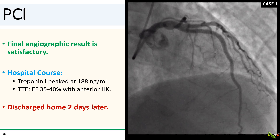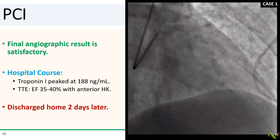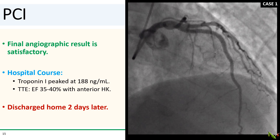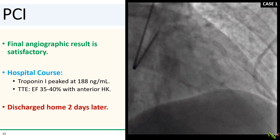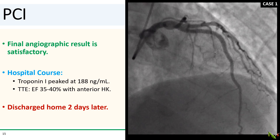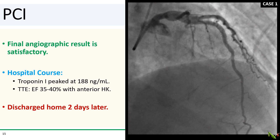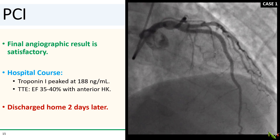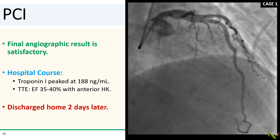She had a real MI. Her troponin peaked at 188 nanograms per ml, and the echo showed an EF of 35 to 40 percent with anterior hypokinesis — pretty much what you would get with an anterior STEMI. Fortunately, clinically she did quite well and was discharged a couple of days later.